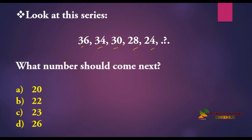So 36, 34, 30, 28, and 24, right? In this series, it's an alternating number subtraction. If you look here, this is like minus 2: 36 minus 2 equals 34.